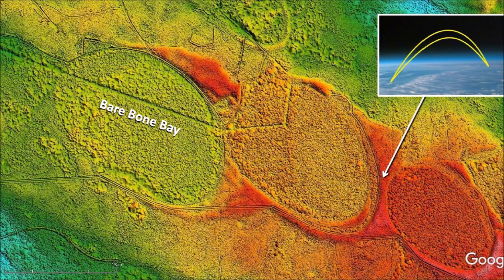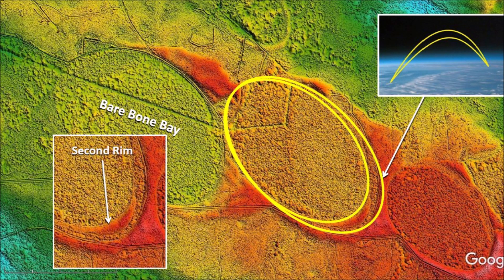There are also bays that completely overlap each other. This happens when the ballistic trajectories of the ice projectiles have slightly different launch angles but the same range. The first impact creates an inclined conical cavity that produces a prominent rim in the direction the projectile was traveling. The second projectile falls within the area of the first one and makes a second rim. In this case, the two impacts overlap the rim of Bare Bone Bay, which is probably why the rim does not look like a neat crescent.